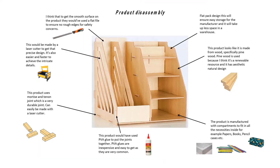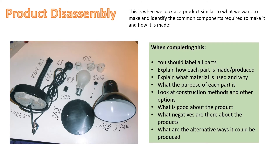Another example is where you have one picture available: you paste the picture in the middle and then try your best to go around and explain how each part is made. This student has written the type of joint used and also the process — for example, this part is made using a laser cutter: it's quick and accurate. These grooves here are also made using a laser cutter.